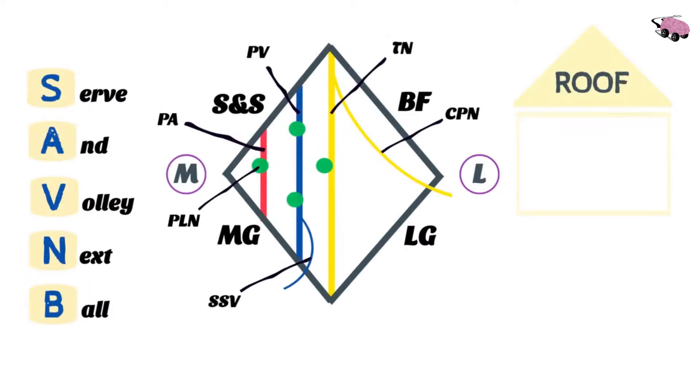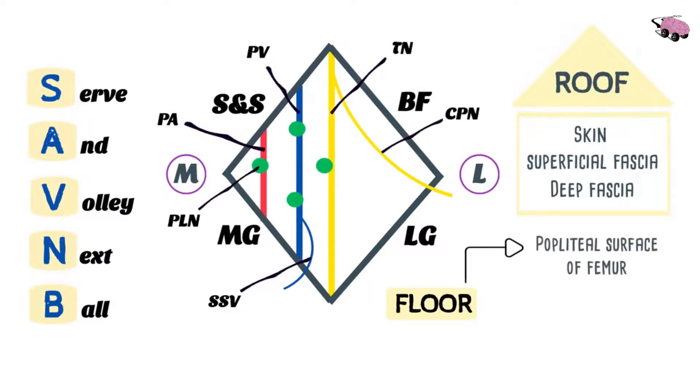The roof of the popliteal fossa is made up of the skin, then the superficial fascia, and then the deep fascia. Next is the floor of the popliteal fossa. First we have the popliteal surface of femur, then the oblique popliteal ligament, and the last one is the popliteus muscle.